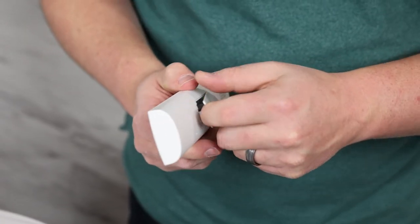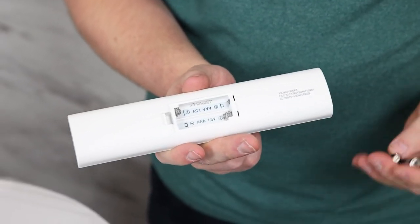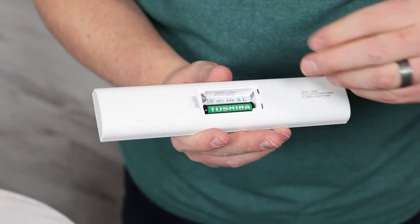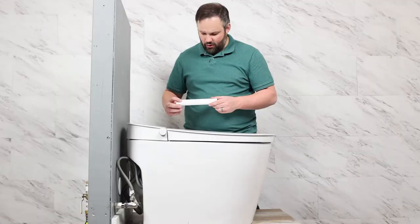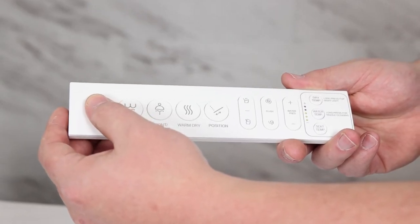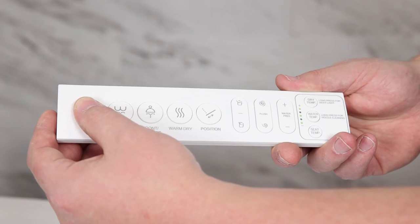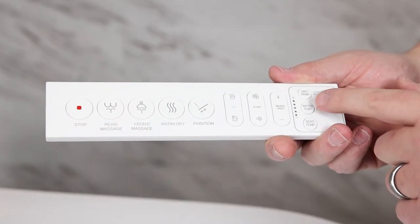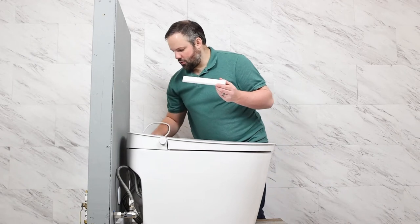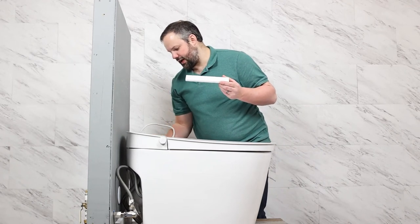So now we need to put batteries into the remote and then pair the remote to the toilet. This is done by pressing and holding on the stop button until we see the first, third and fifth lights on this side blinking, which we see now. And while those are blinking, we plug the unit in so that they can link up.